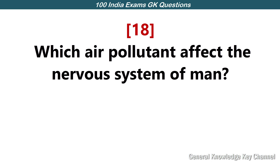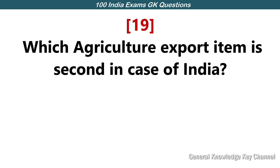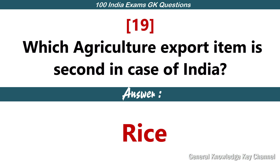Which air pollutants affect the nervous systems of humans? Lead. Which agriculture export item is second in the case of India? Rice.